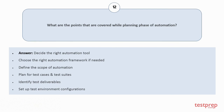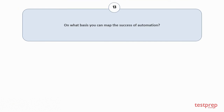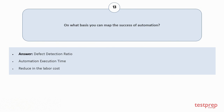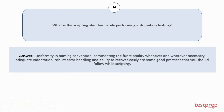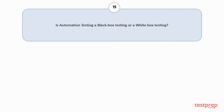Question number thirteen: On what basis can you map the success of automation? One, defect detection ratio; two, automation execution time; three, reduction in labor cost. Question number fourteen: What is the scripting standard while performing automation testing? Uniformity and naming conventions, commenting the functionality wherever necessary, adequate indentation, robust error handling, and ability to recover easily are good practices to follow while scripting.